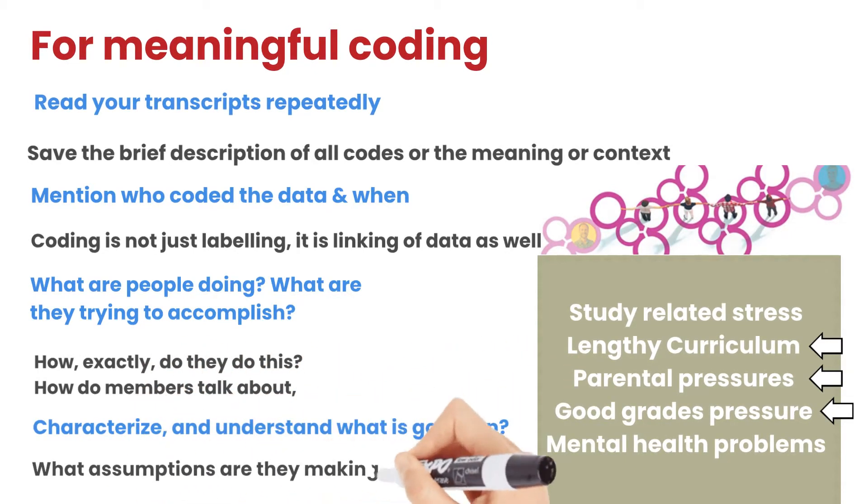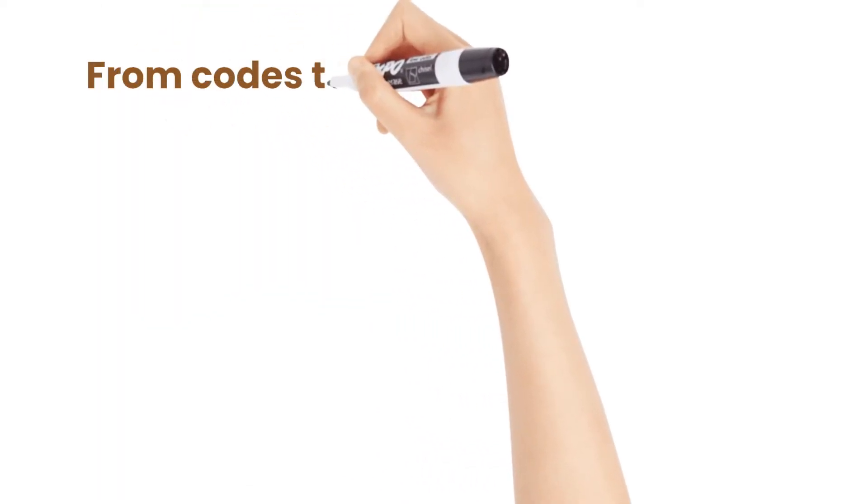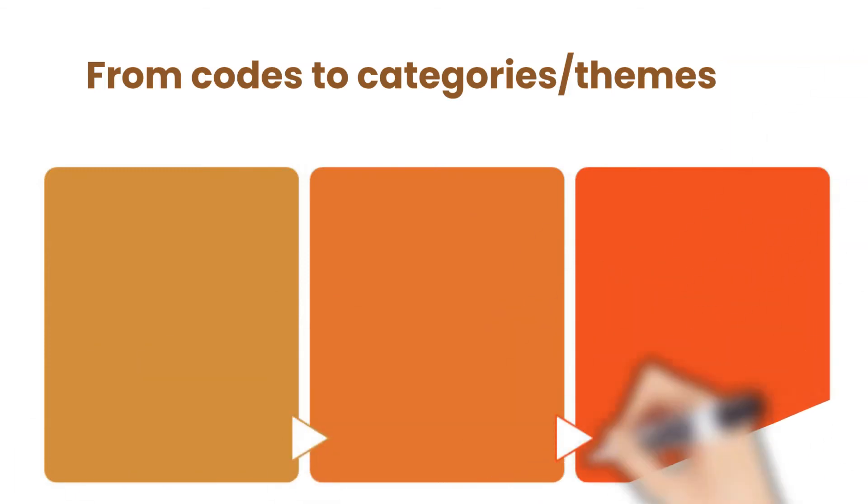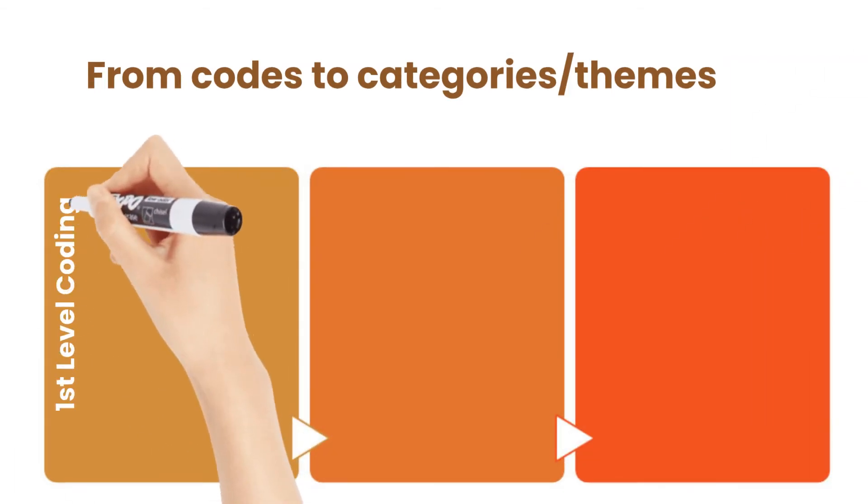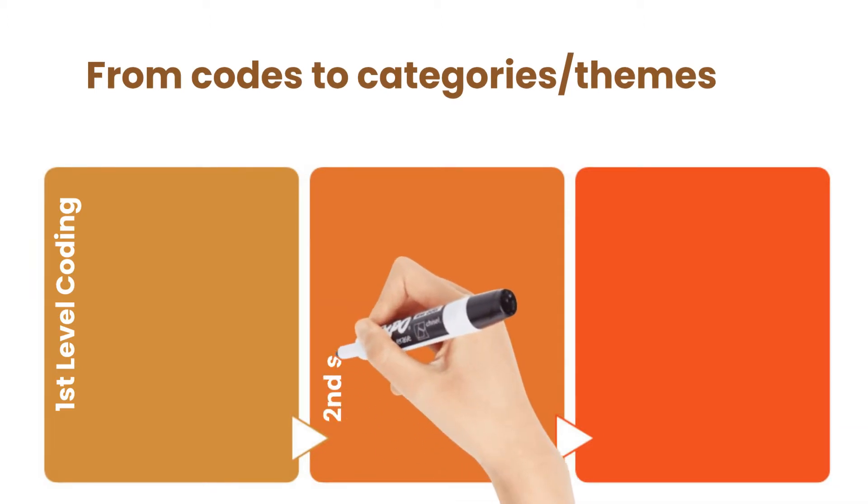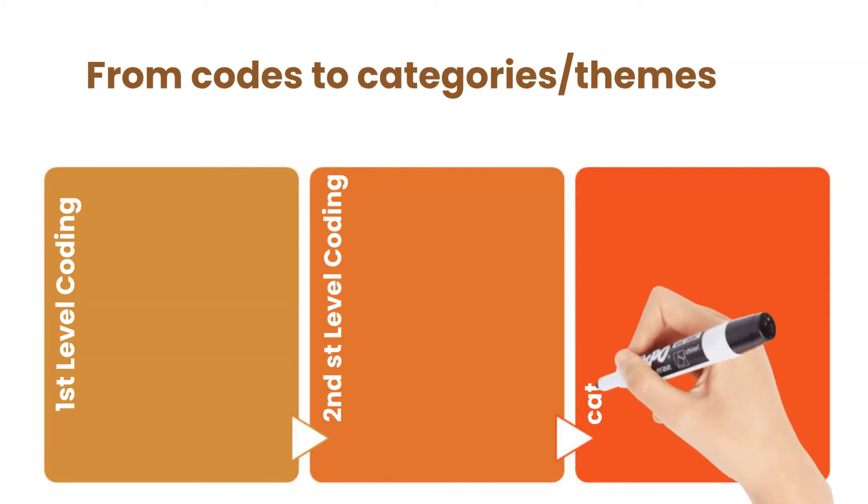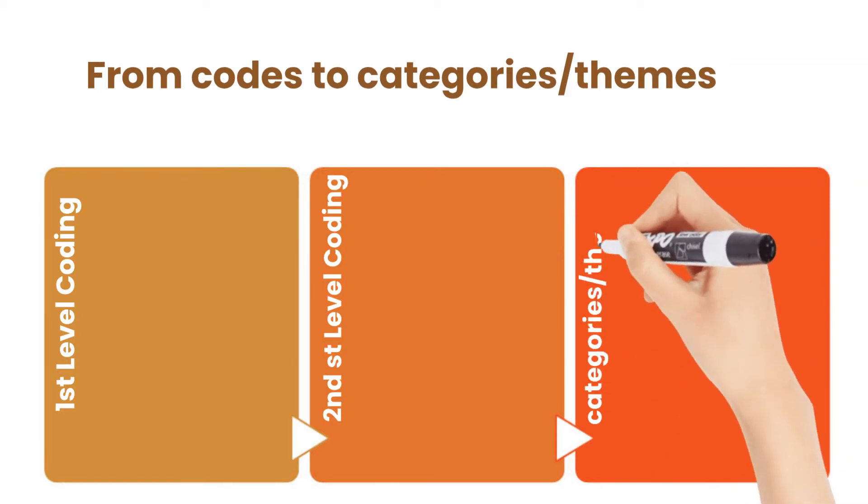Moving from codes to themes or categories involves three stages commonly. At first level coding, you derive codes from data. Then at second stage, you find similarities or differences. And thirdly, you assign a broader category. See this example.